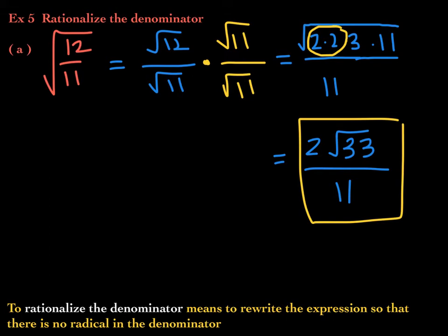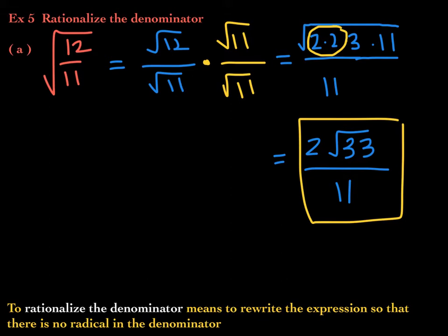Be careful: do not make the false assumption that all we have to do is multiply the denominator by itself every single time. That is not true. The very next example will show that it's not as easy as just multiplying the denominator by itself.